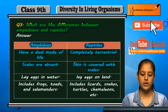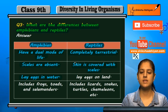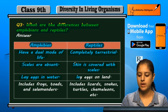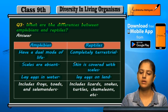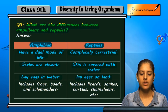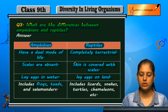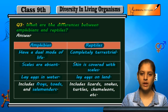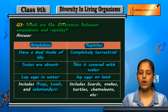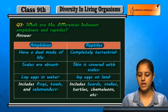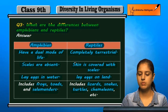Amphibians lay eggs in water, while reptiles lay eggs on land. Some examples of amphibians are frogs, toads, and salamanders. And reptiles include lizards, snakes, turtles, chameleons, etc.